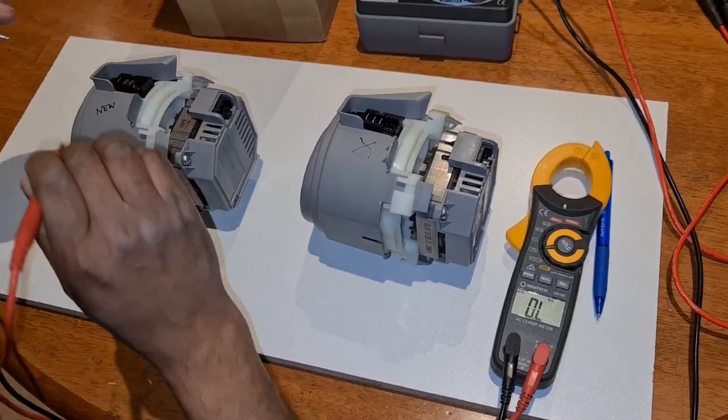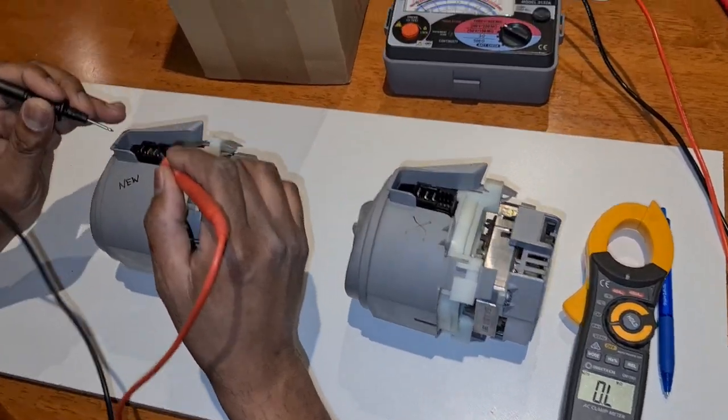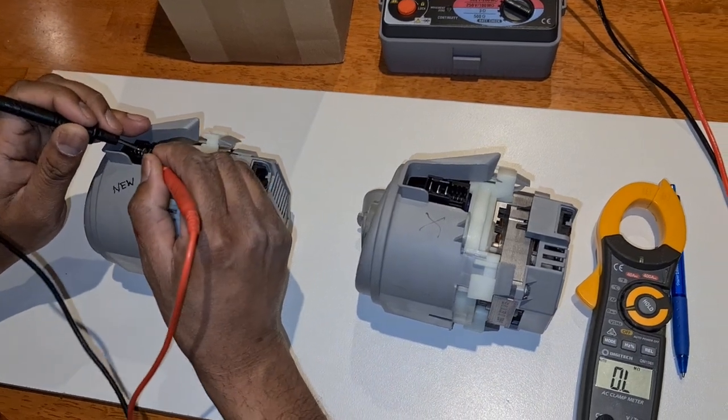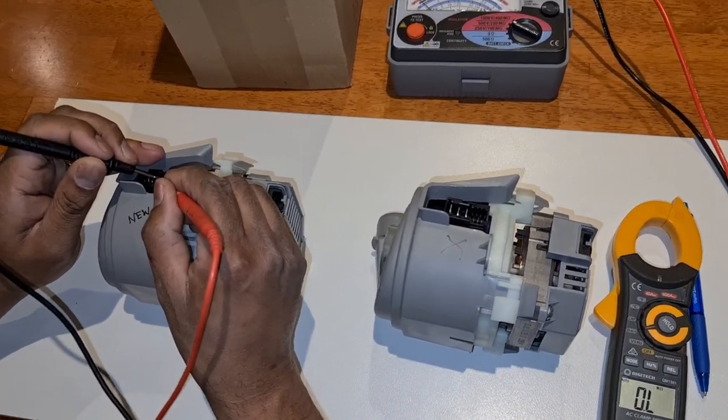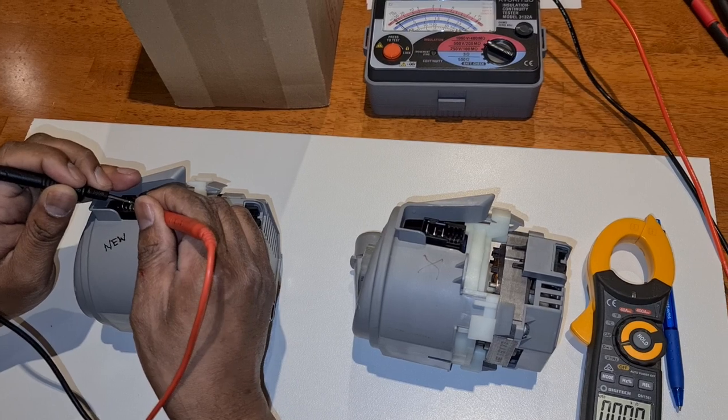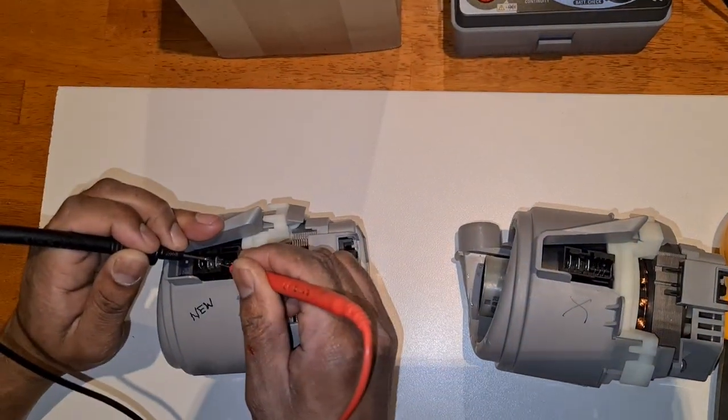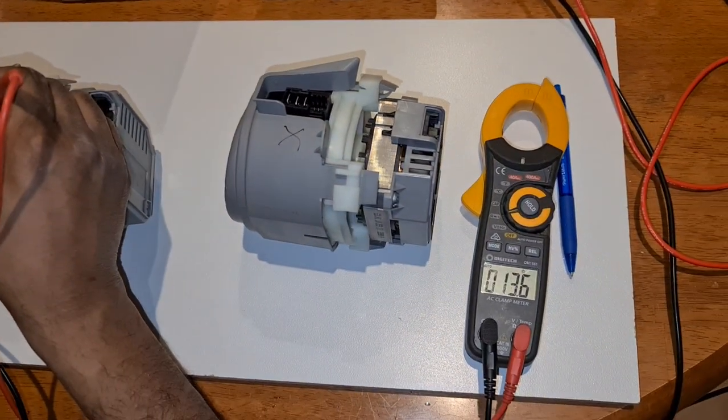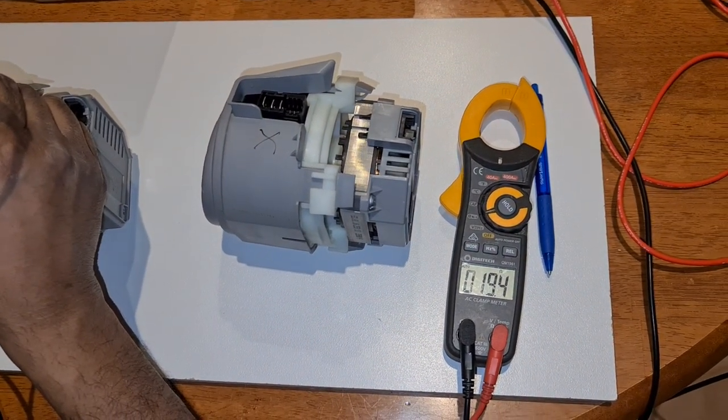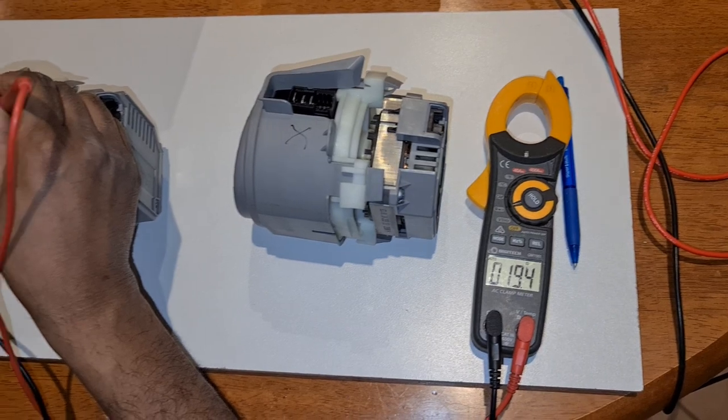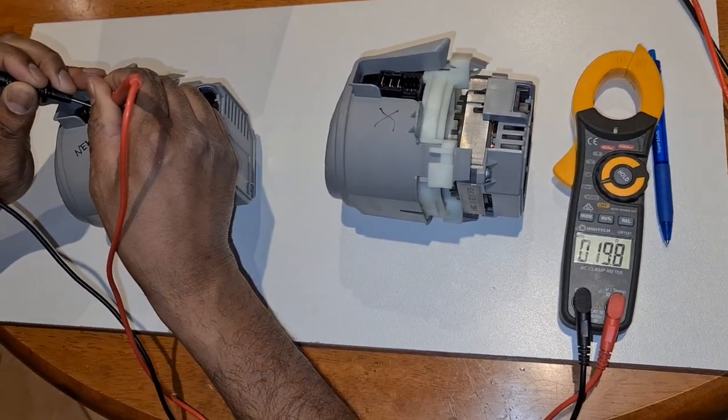So on a good one, we'll start with a new one. The good Bosch pump, the heater terminals are the second and third one. And we should typically get a reading of about 19 ohms, which we are, 19 to 20 ohms. That's for the heating element.